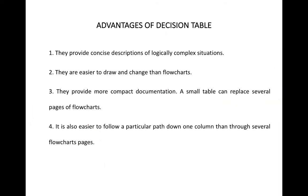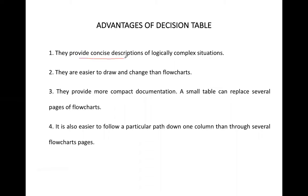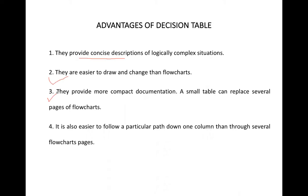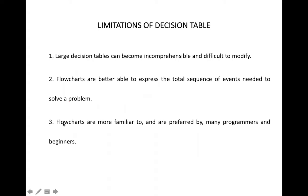Talking about the advantages of the decision table: first, it provides a concise description of logically complex situations. Second, decision tables are easier to draw and change compared to flowcharts. Third, they provide a more compact view — flowcharts and decision trees occupy a lot of space, whereas decision tables occupy less space. Fourth, it is easier to follow a particular path down one column than through several flowchart pages.